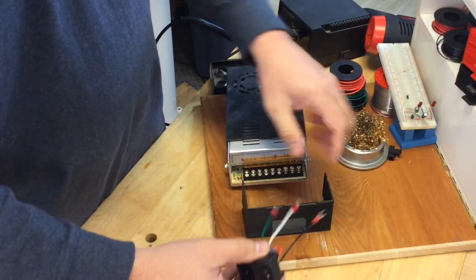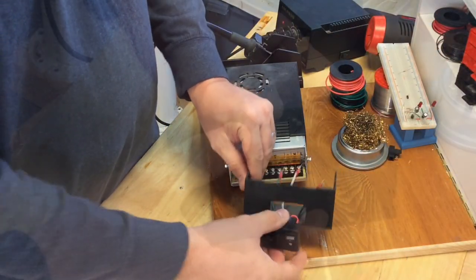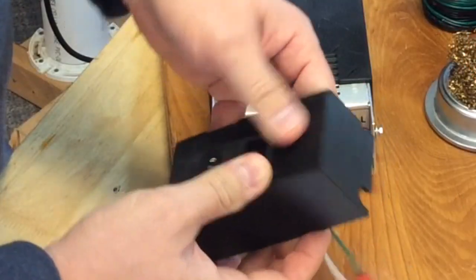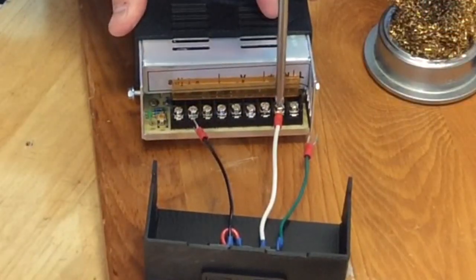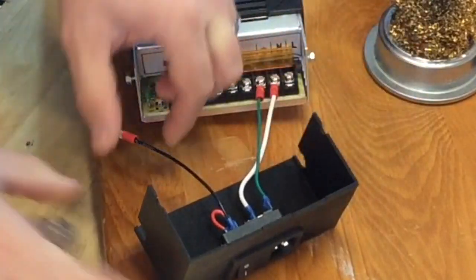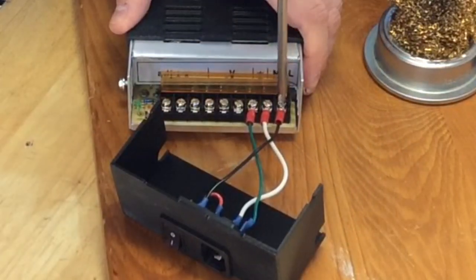Now I need to install this into the 3D print. So you just slide the wires through, push it in until it snaps, and that was good. Now I needed to make the connections. So the white wire went to the neutral, the black wire goes to live, and the green wire goes to ground. So that was done.